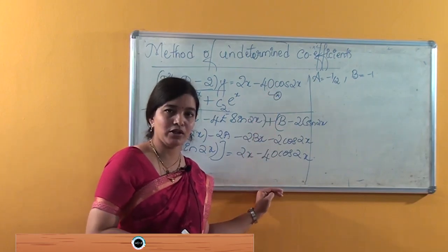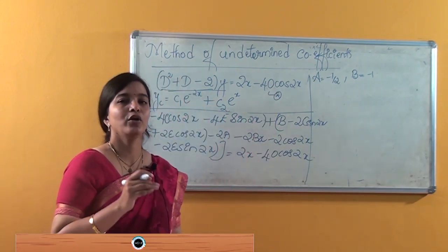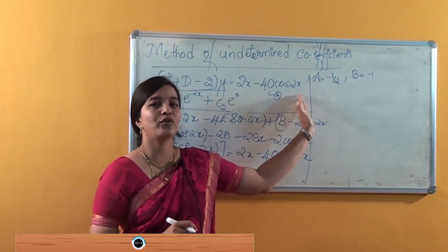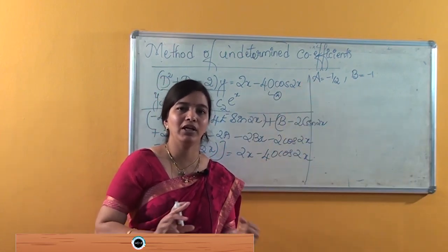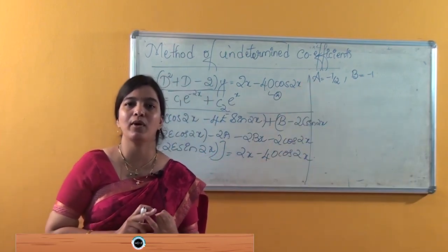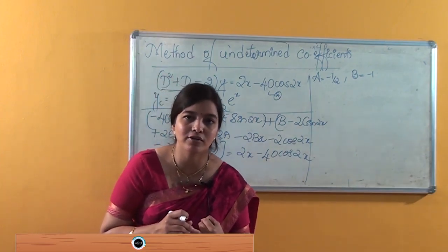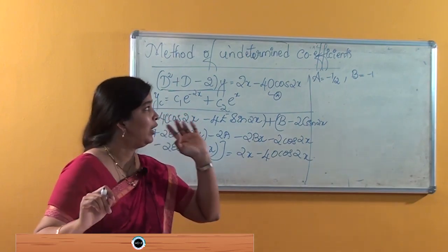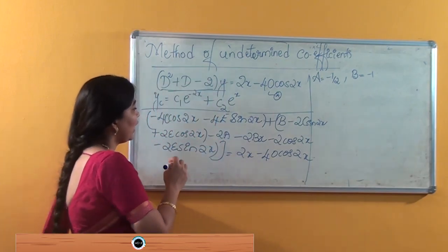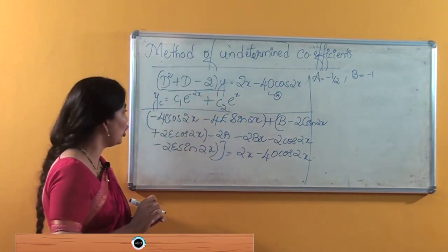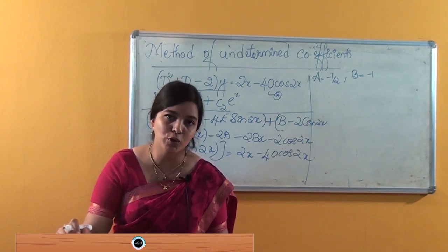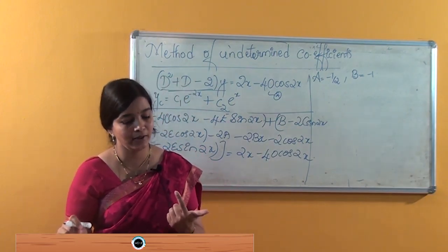We have solved the equation and obtained the complementary solution. To find the particular solution, what we did is we considered yp equal to Ax plus B plus C cos 2x plus E sin 2x. Then we found dyp and d-squared yp, and substituted into the equation. We compared the coefficients of x, the constants, and obtained the values of A and B. But we still have to obtain the values of C and E by comparing the coefficients of cos 2x and sin 2x.